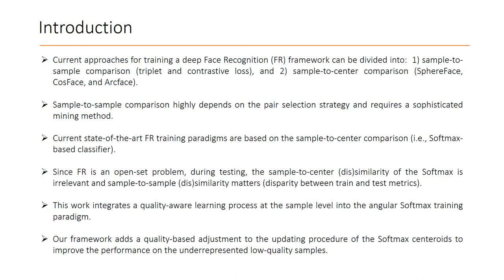Recent attempts on face recognition are mainly focused on manipulating the training criteria. Approaches for training a deep face recognition model can be divided into sample-to-sample and sample-to-center loss functions. Sample-to-sample comparison highly depends on the pair-selection strategy and requires a sophisticated mining method. In large-scale datasets with thousands of identities and millions of samples, there is a combinatorial explosion in the number of possible pairs.